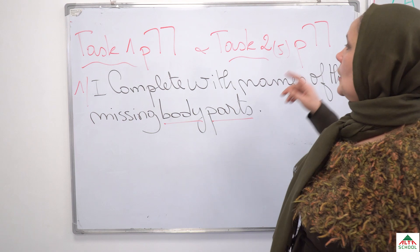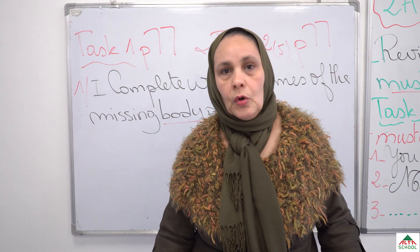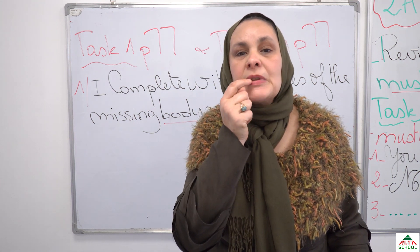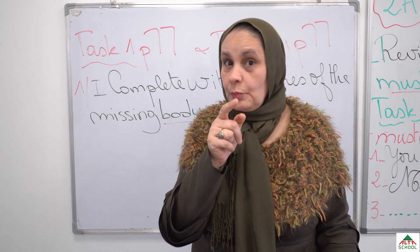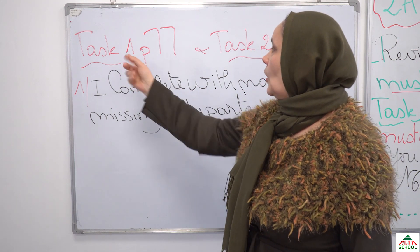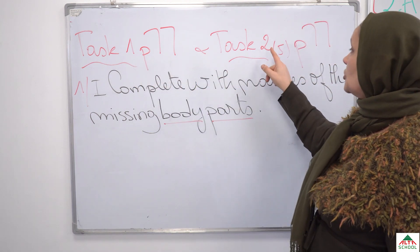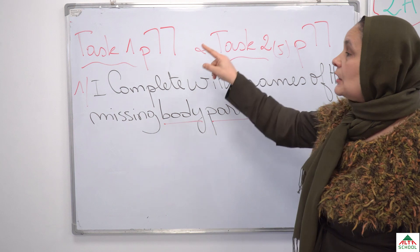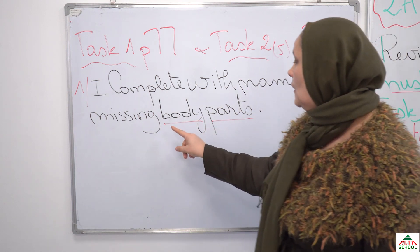Yesterday we also did body parts — we saw the face and the whole body. For example: nose, eyes, ears, mouth, lips, a tooth — teeth is the plural of tooth. Now please open your books on page 77, task 1. The second task is number 5 on page 77. You complete with the names of the missing body parts.